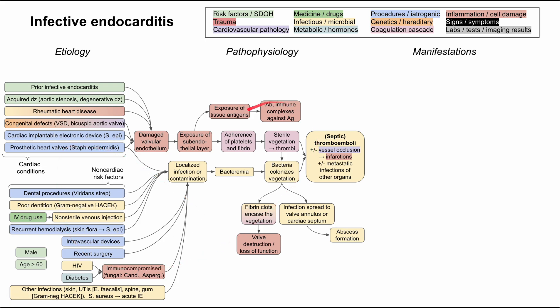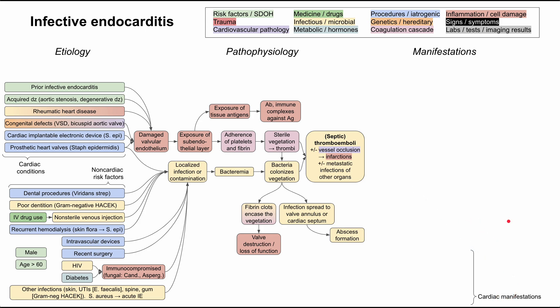Now for the manifestations, which branch off from the pathophysiology. Starting with cardiac manifestations: if you have valve destruction and loss of valve function, you can have a new heart murmur, or a changing heart murmur — for instance, one that started at 1/6 and is now 3/6 — which is concerning for infective endocarditis. With severe valve destruction, the valves may no longer function, causing heart failure and decreased cardiac output, and the patient may present with dyspnea and lower extremity edema.